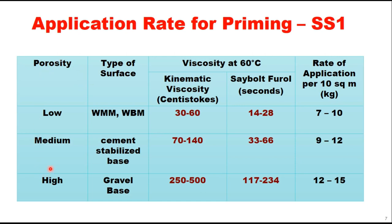The application rate for priming depends upon the type of surface, that is the porosity of the base. For low porosity like WMM or WBM, the rate of application of SS1 emulsion is 7 to 10 kg per 10 square meter. For medium porosity like cement stabilized or lime stabilized base, it is 9 to 12 kg per 10 square meter. For high porosity like gravel base, it can be as high as 12 to 15 kg per 10 square meter. Viscosity requirements at 60°C are measured either as kinematic viscosity in centistokes or Saybolt Furol viscosity in seconds.